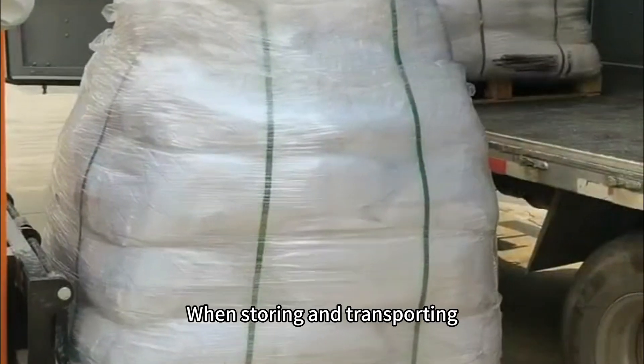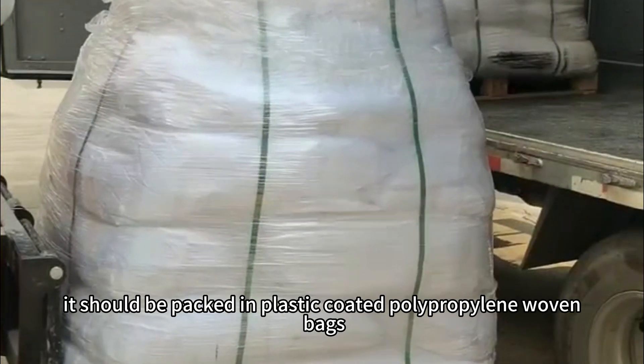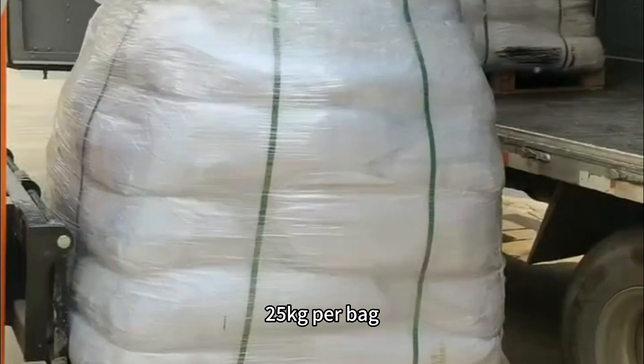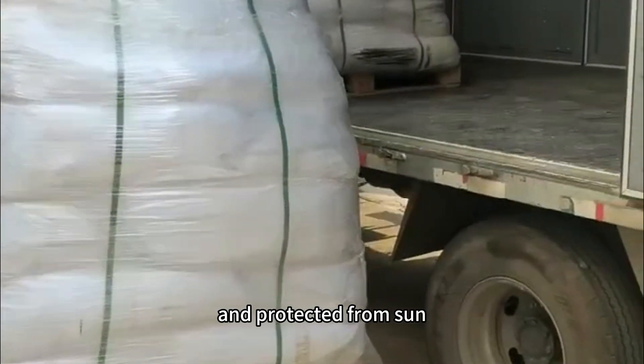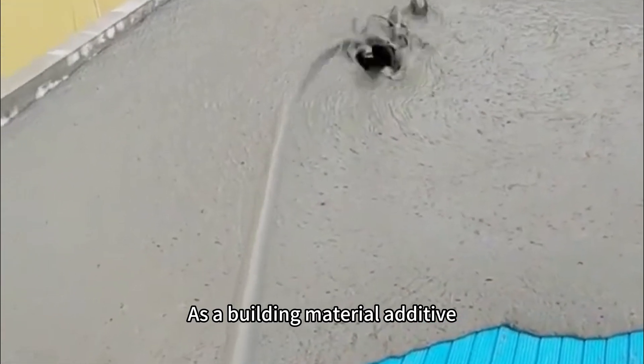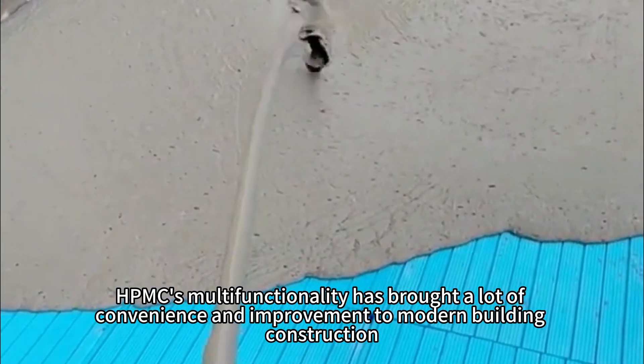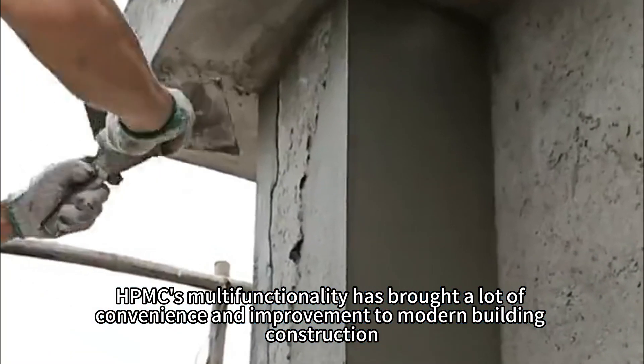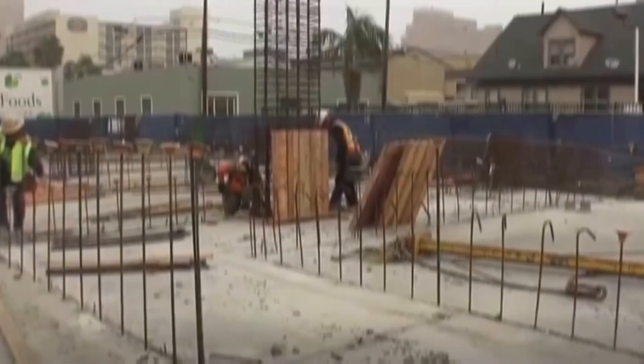When storing and transporting, it should be packed in plastic-coated polypropylene woven bags, 25 kilograms per bag, and protected from sun, rain, and humidity. ASA Building Material Additive HPMC's multifunctionality has brought a lot of convenience and improvement to modern building construction.